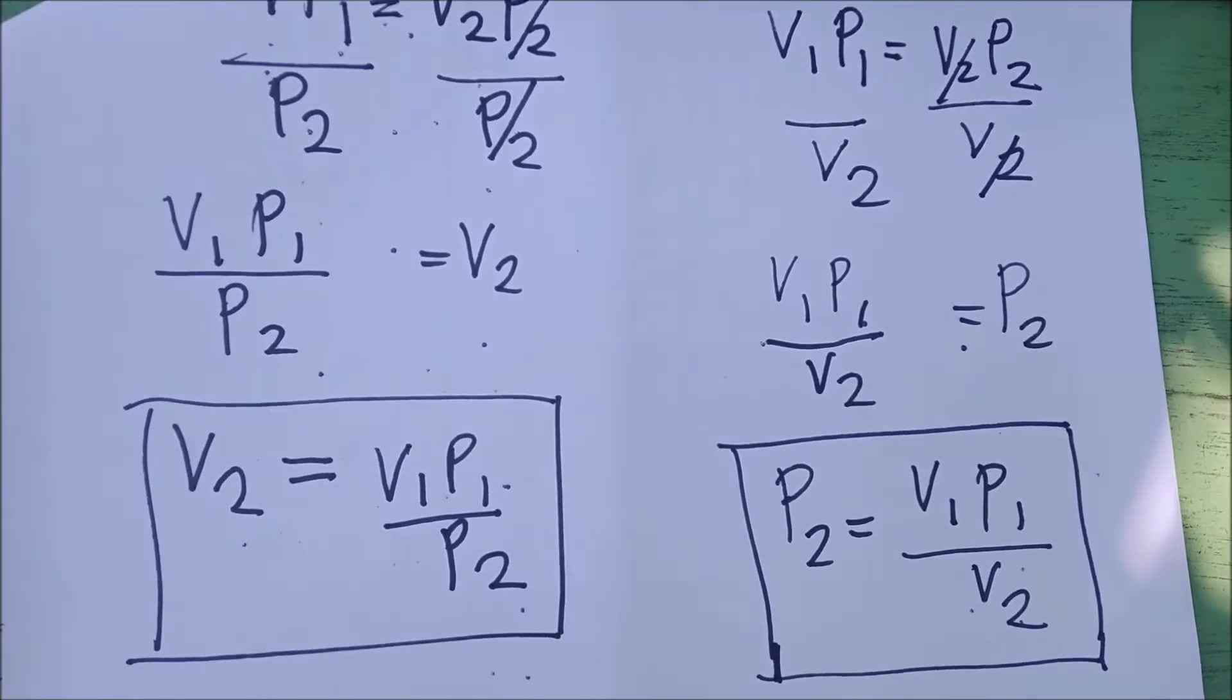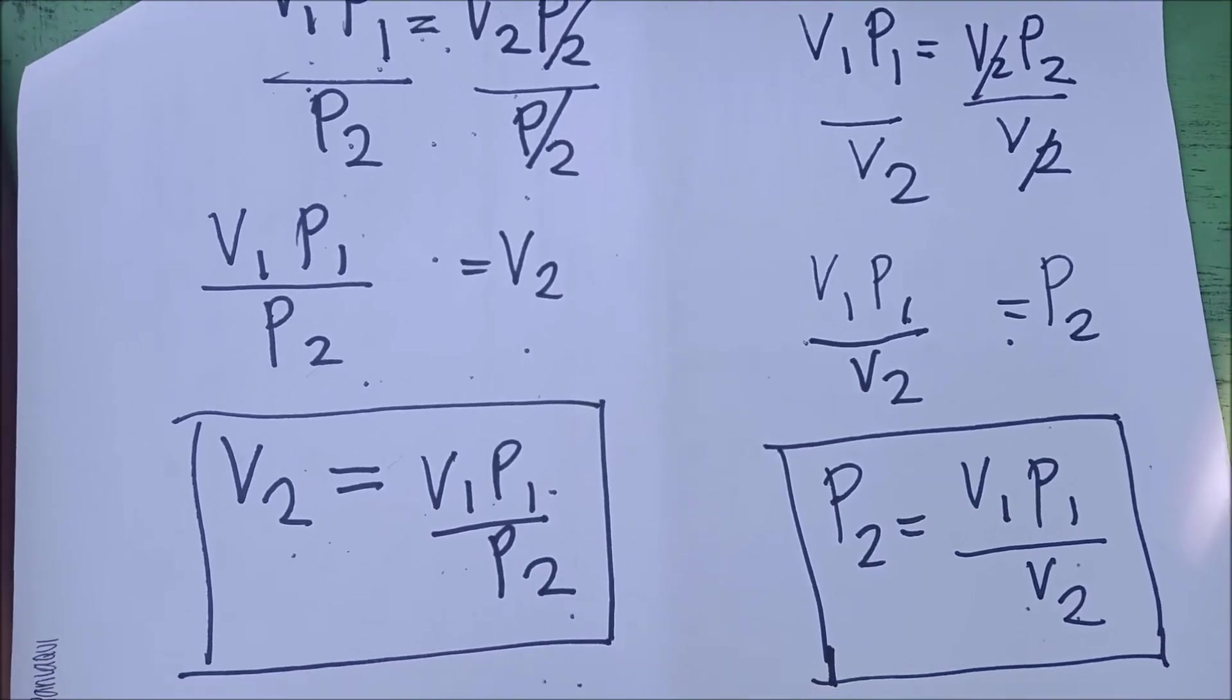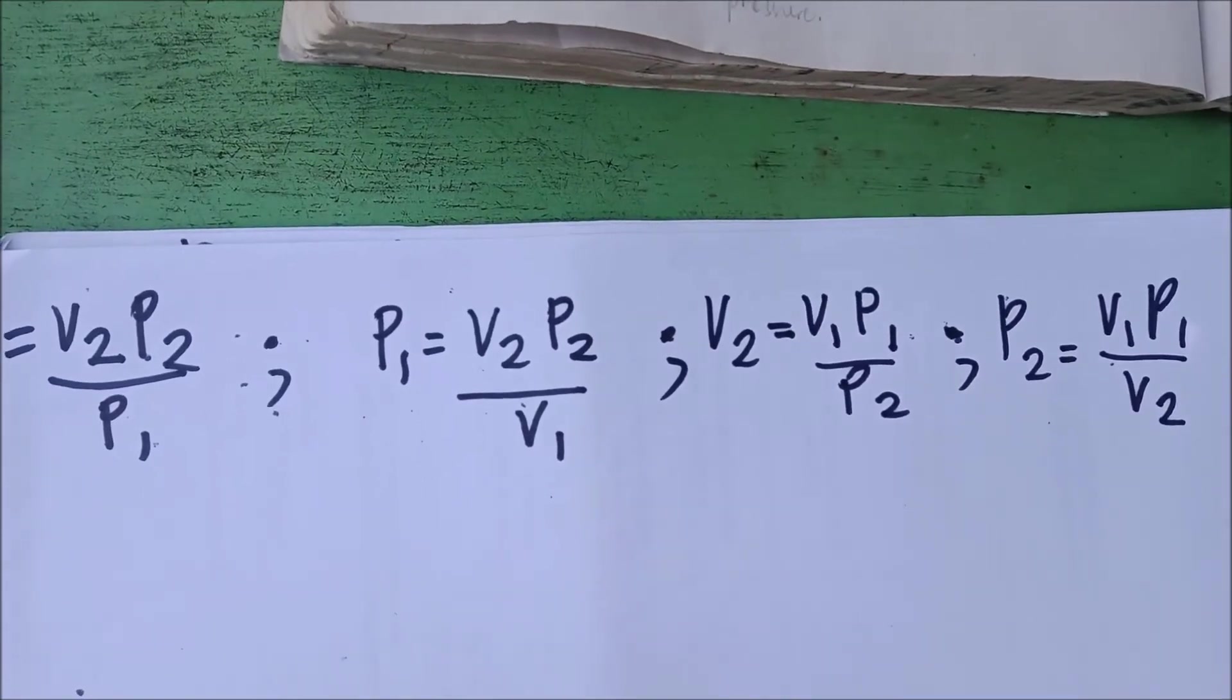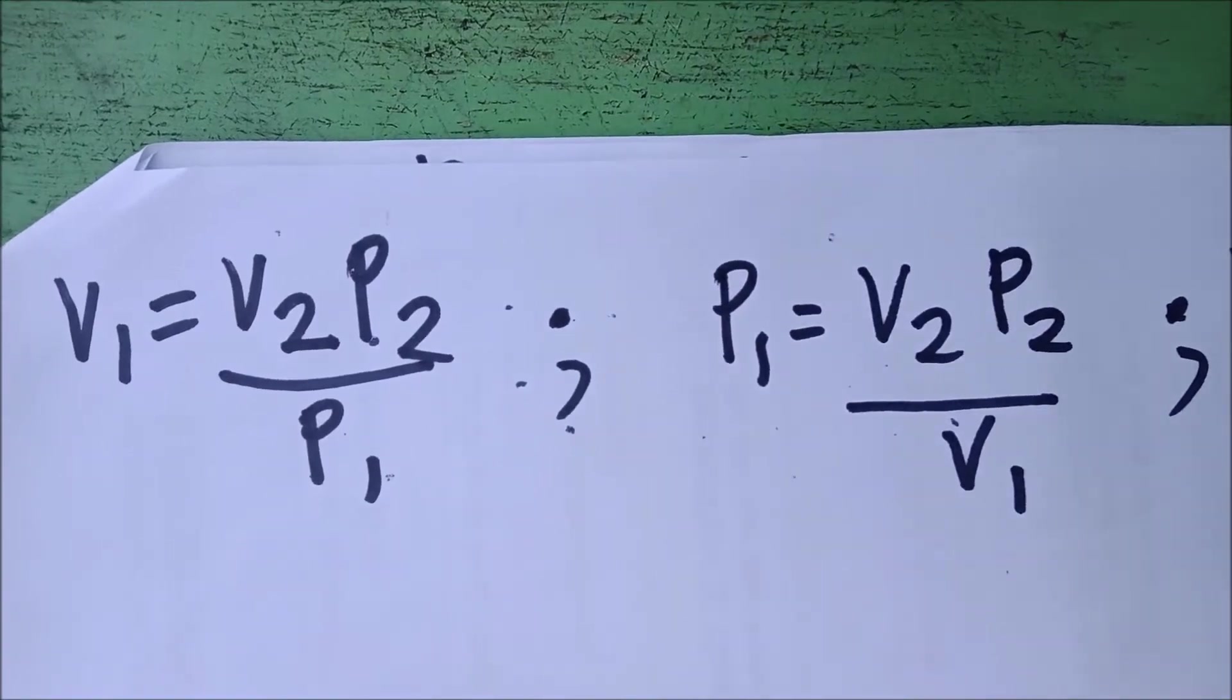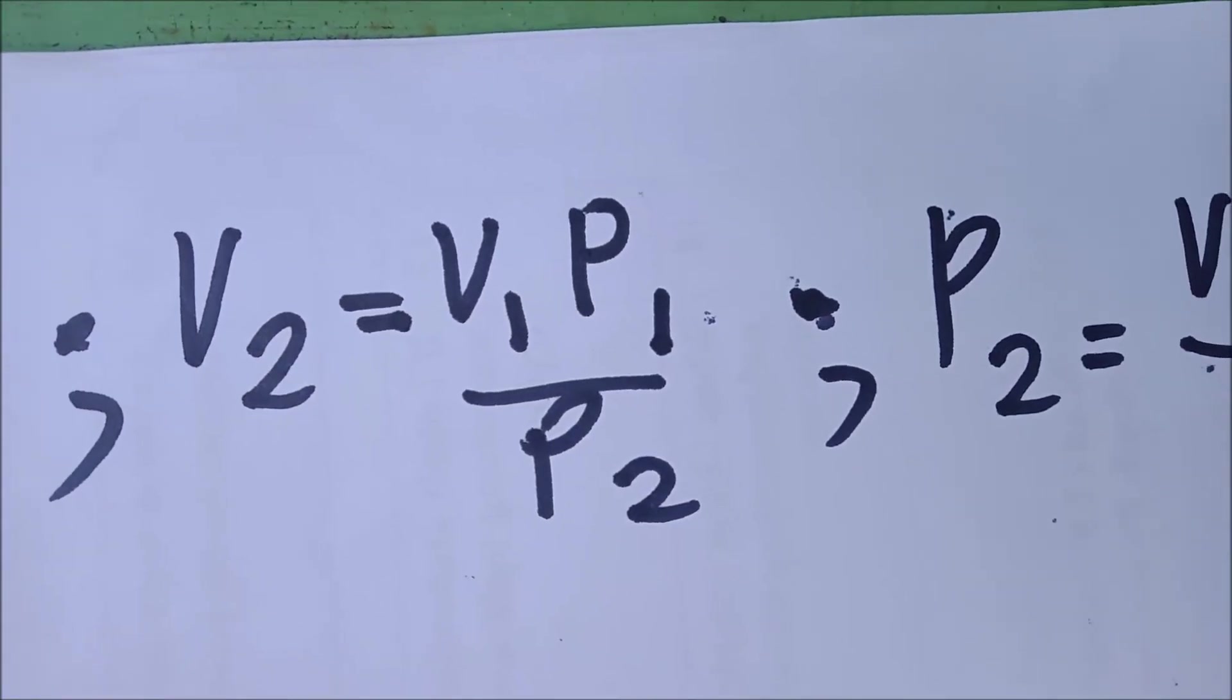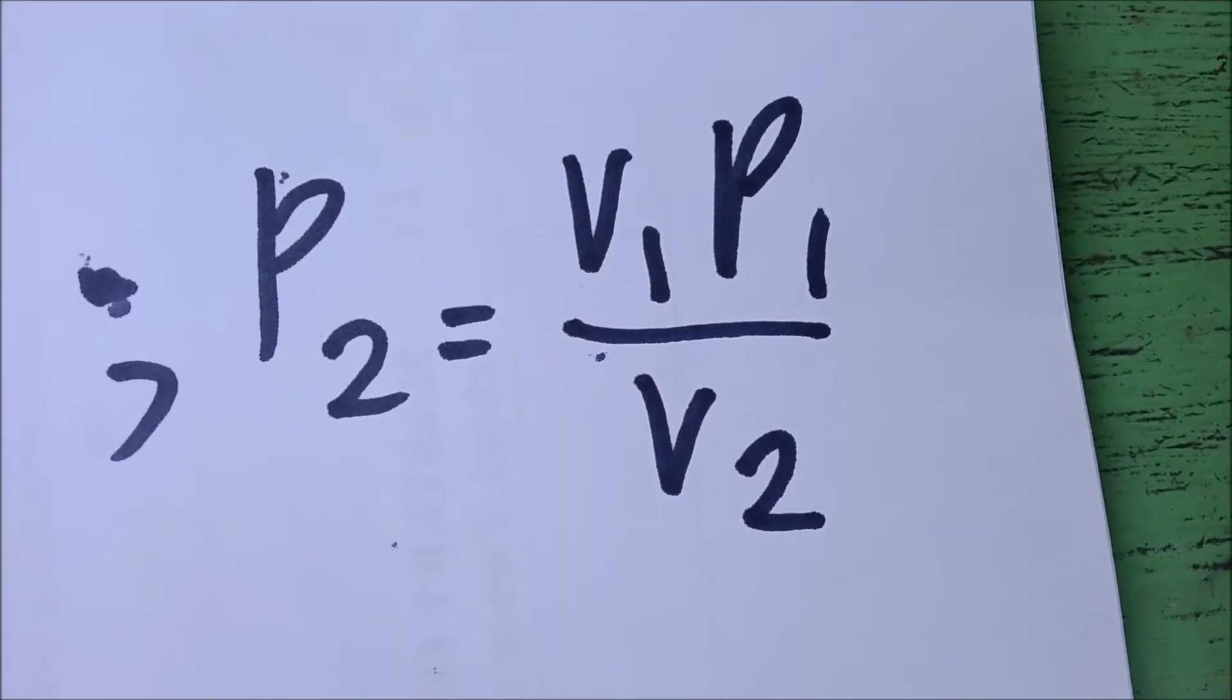We actually have four formulas coming from the Boyle's Law. V1, P1 is equal to V2, P2. These are the four formulas that we derived a while ago. V1 is equal to V2, P2 over P1. P1 is equal to V2, P2 over V1. V2 is equal to P1, V1 over P2. And P2 is equal to V1, P1 over V2.